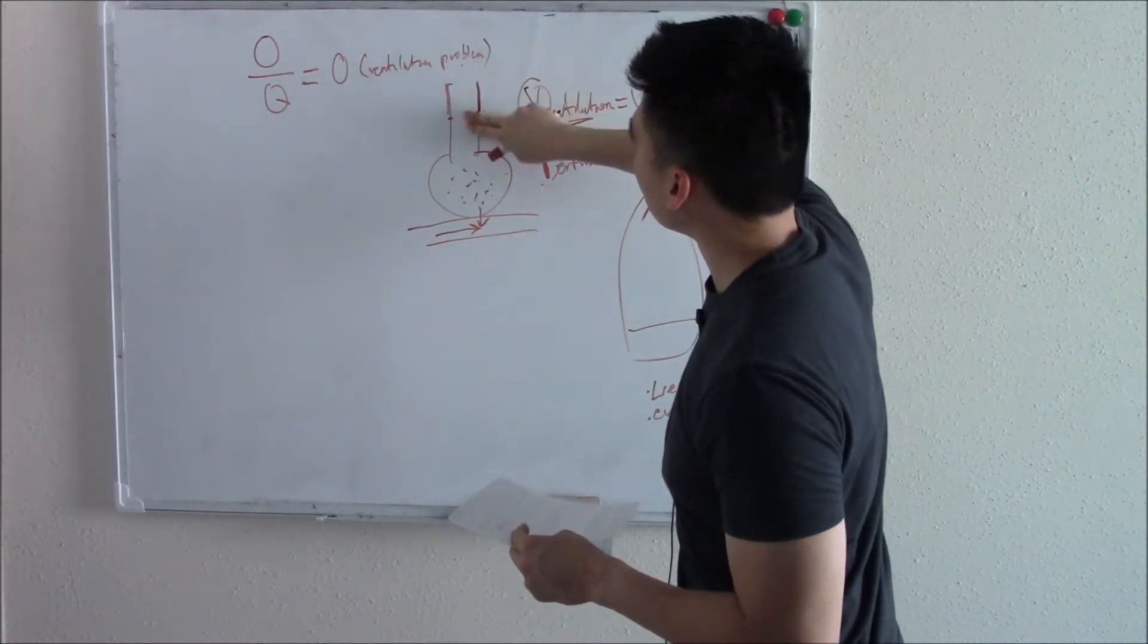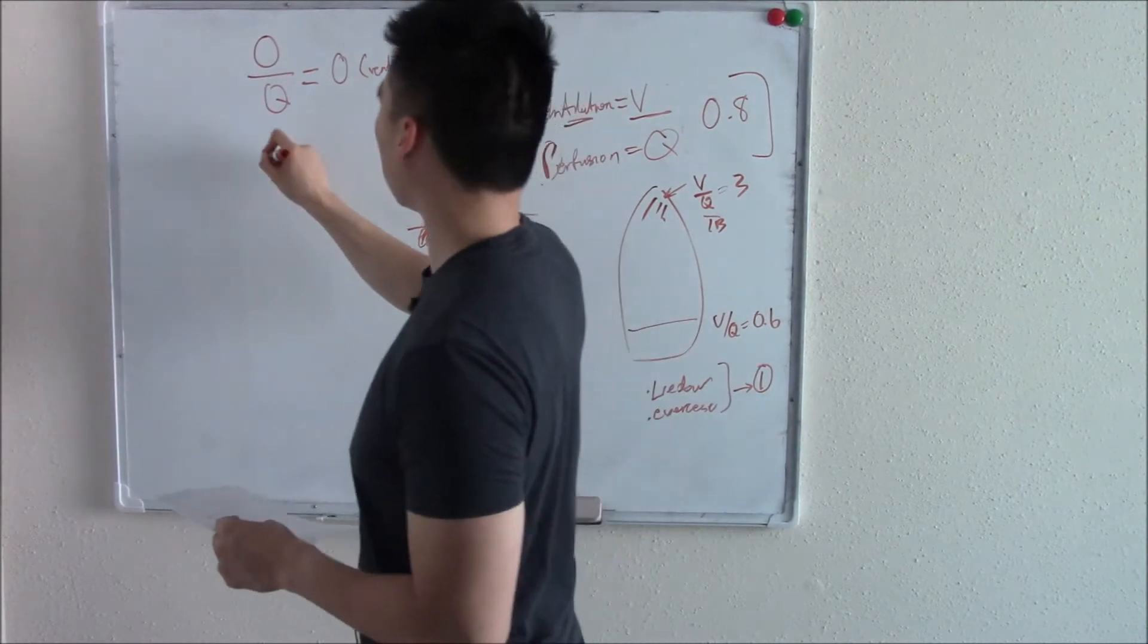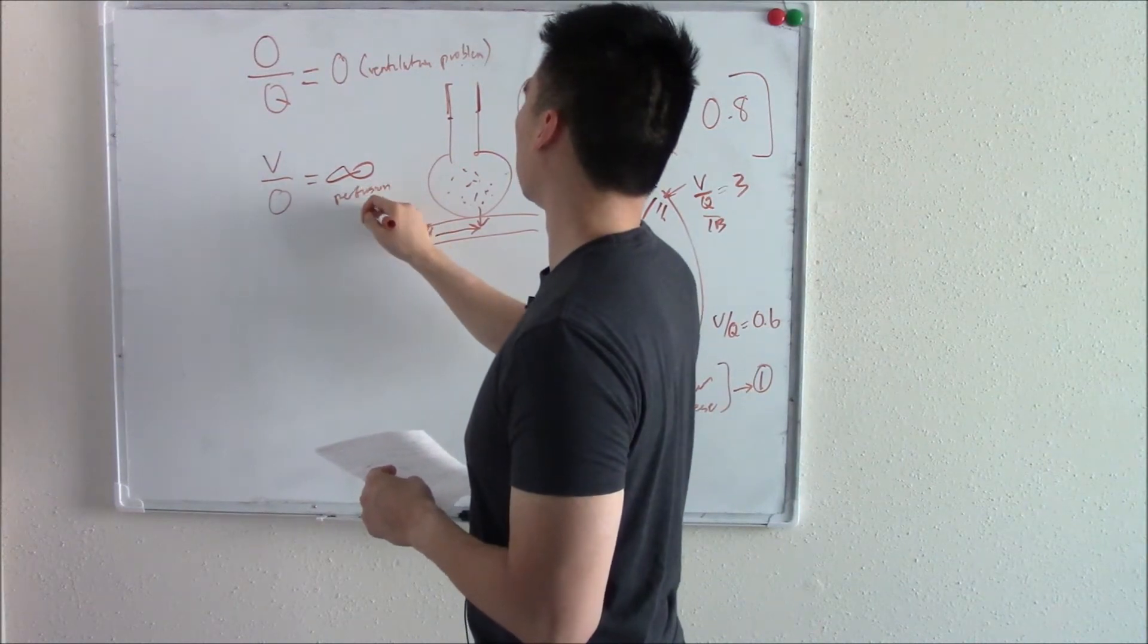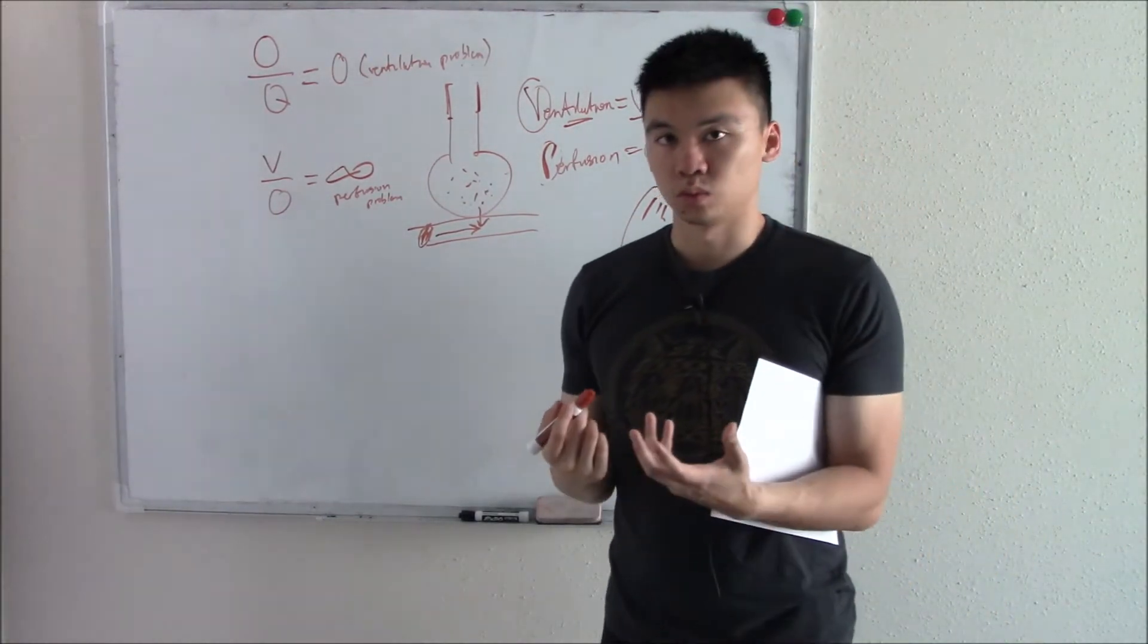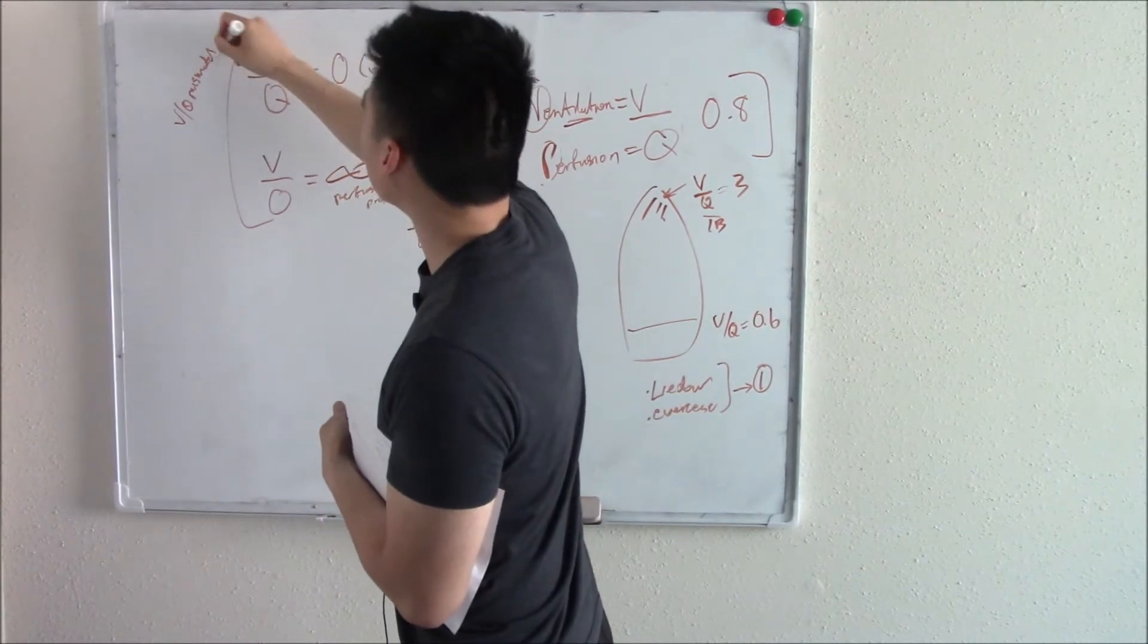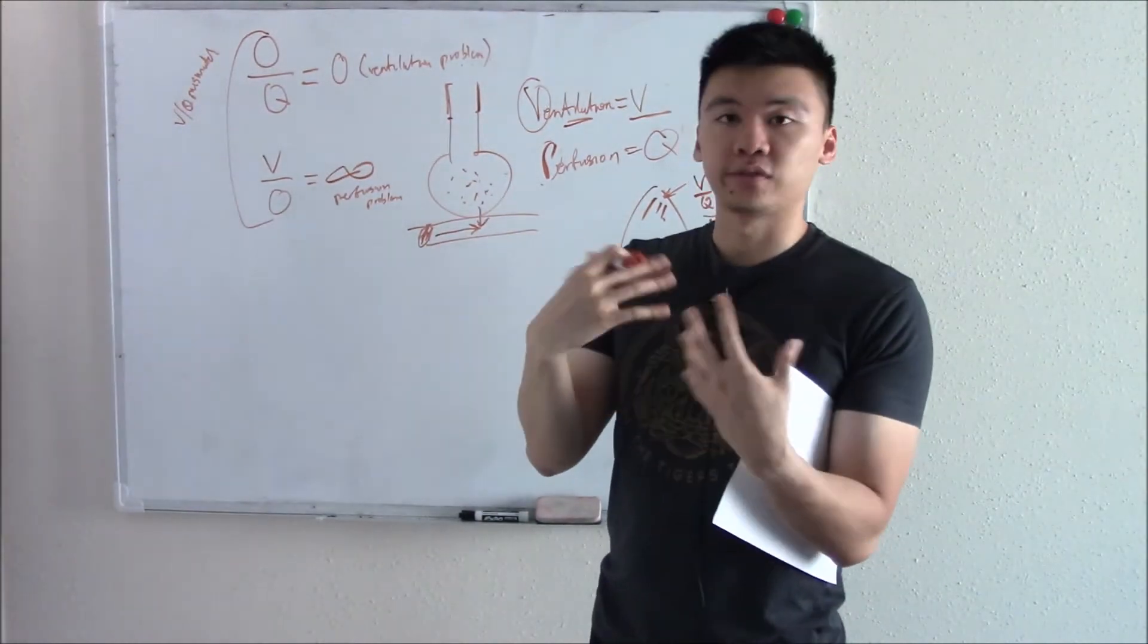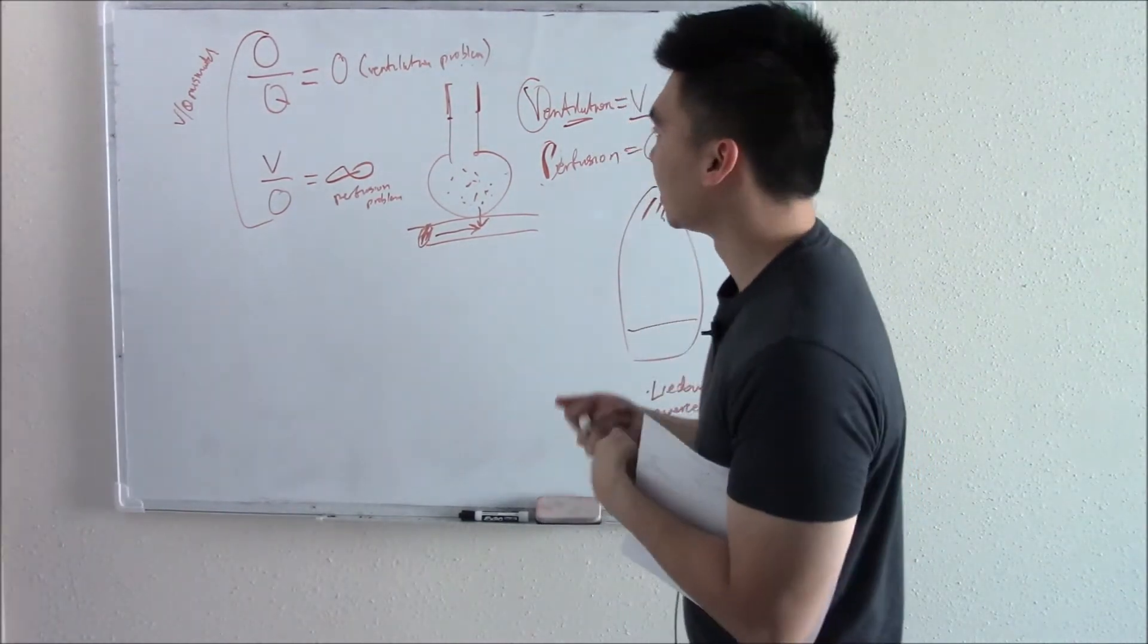Now if we flip the script, if we have some sort of block here and we mess up perfusion, if perfusion goes towards 0, V over 0, well mathematically anything divided by 0 is a very high number, reaches infinity. So a perfusion problem. If they give you a VQ ratio that's off, a VQ mismatch, if it's close to 0, there's something wrong with ventilation. Something's wrong with the ability to get air in. Or if VQ is a very high number, near to infinity, something's wrong with perfusion. Maybe there's an embolus there. It tells you what's the problem. Why aren't they getting the oxygen that they need?